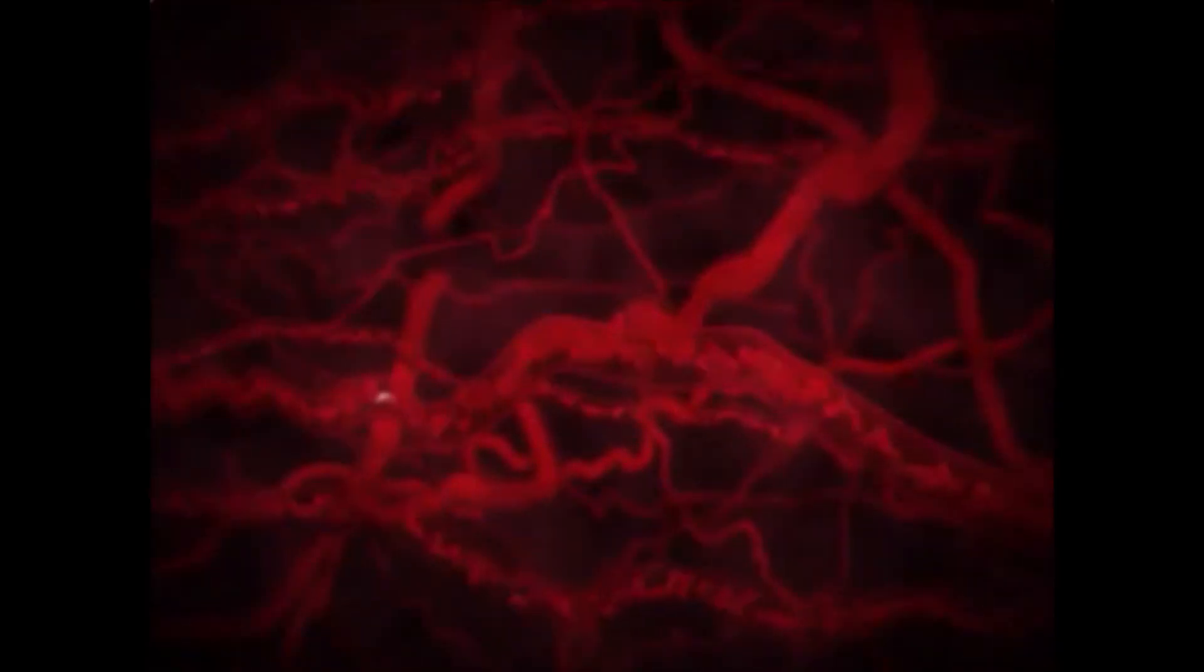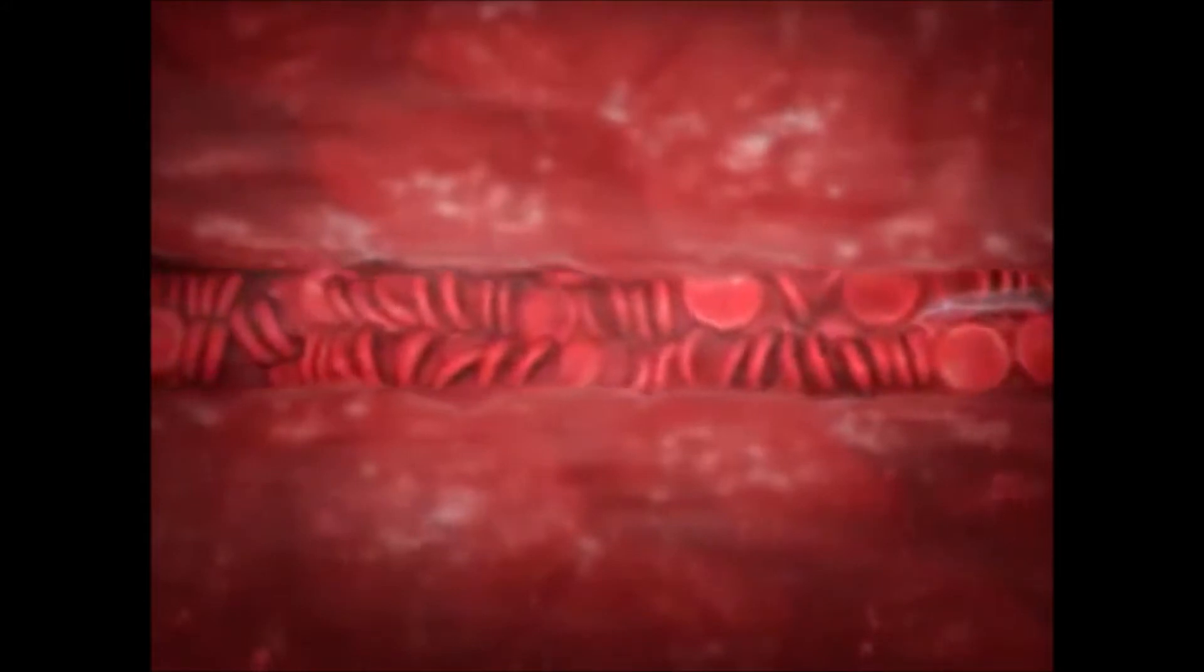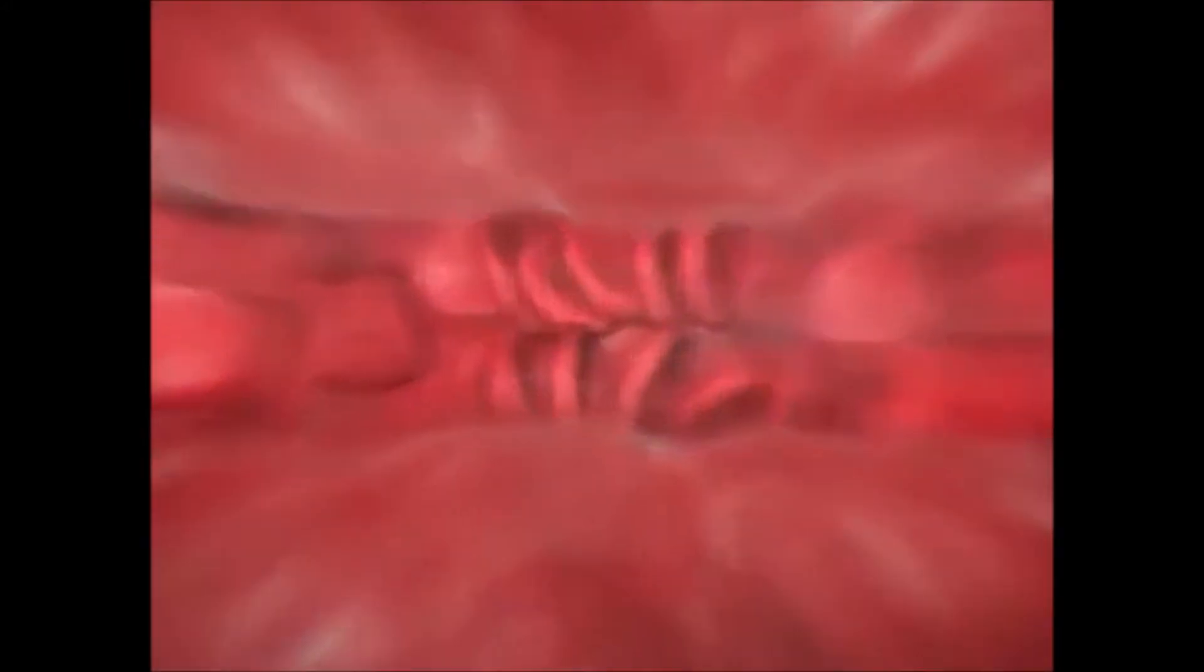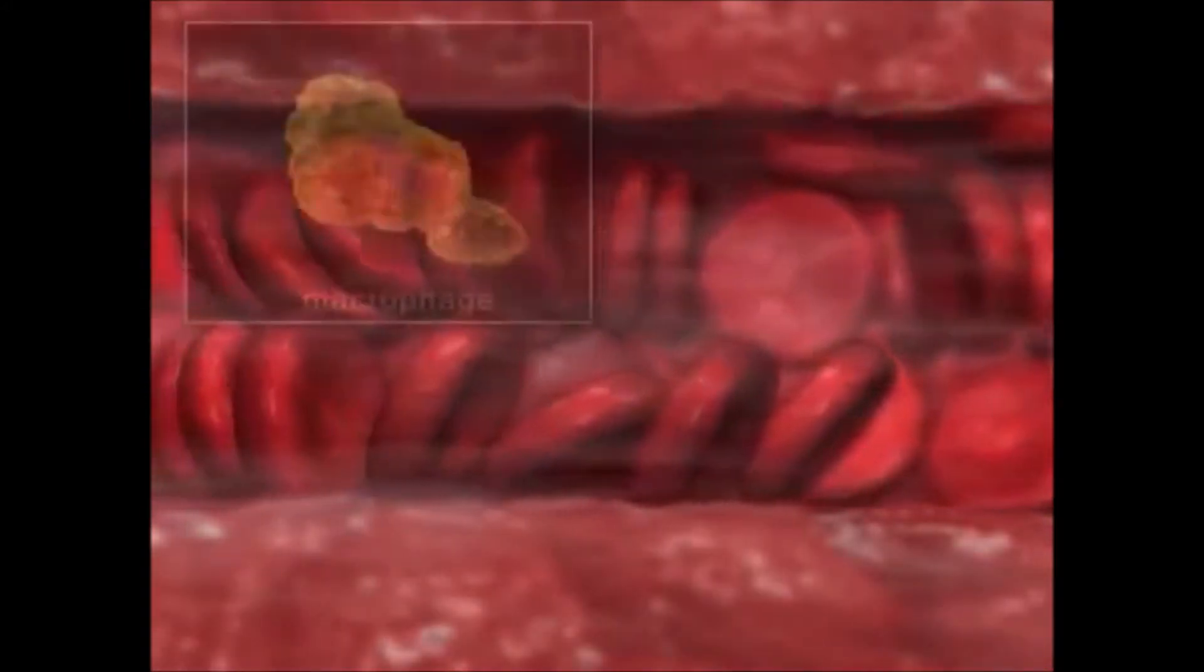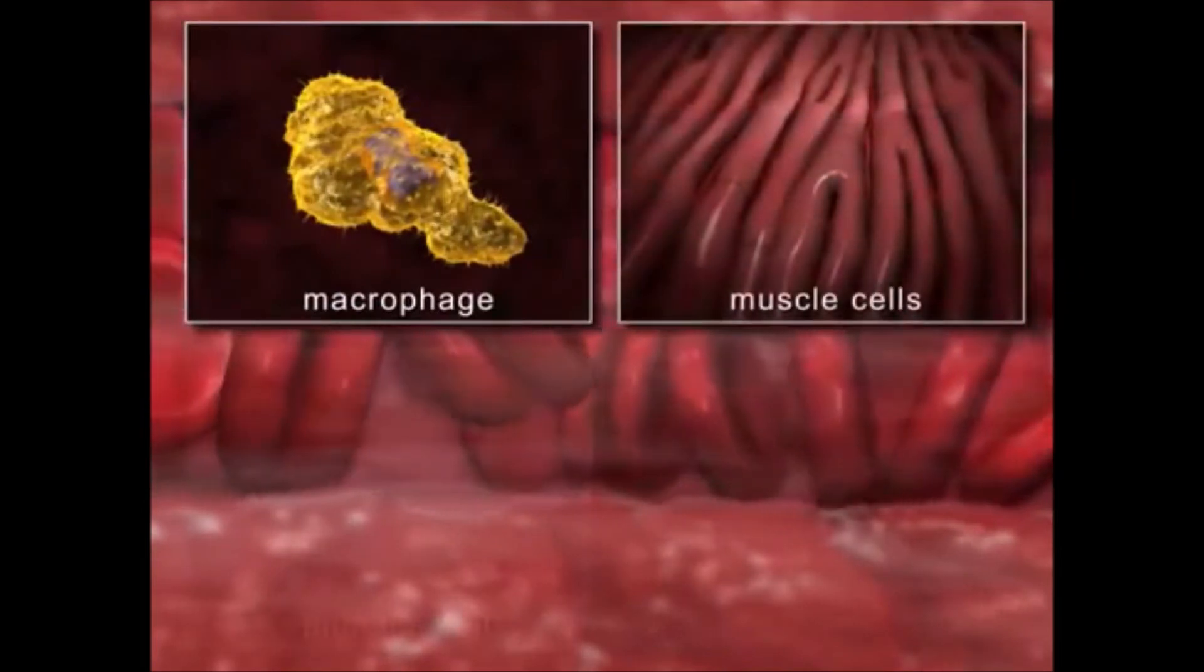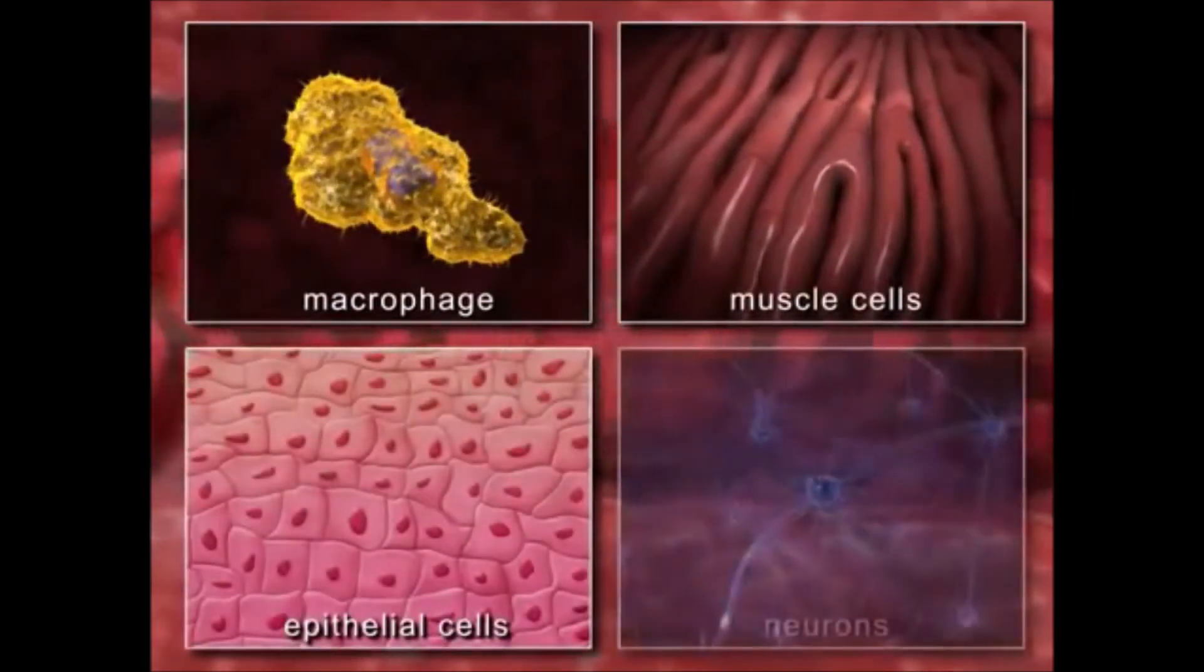When the parasite moves to a region covered by mucosa, it reaches the mammalian bloodstream and subsequently invades different cell types that it encounters, such as macrophages, muscle cells, epithelial cells, and neurons.